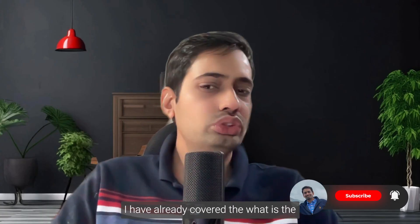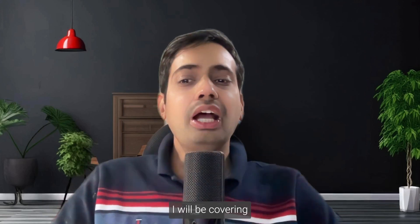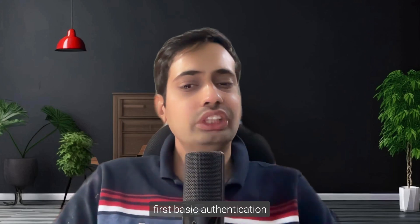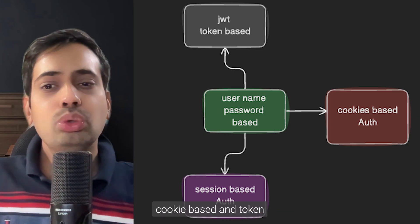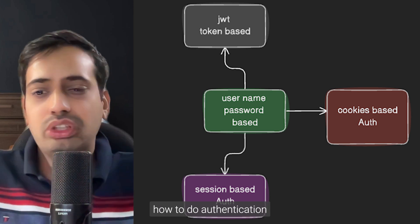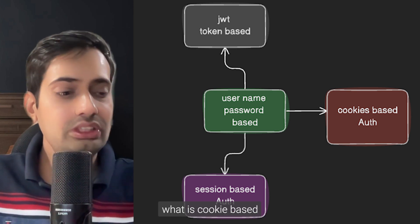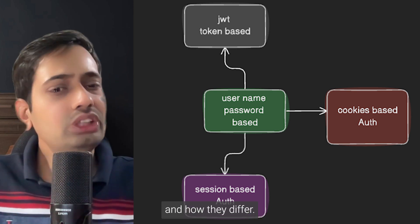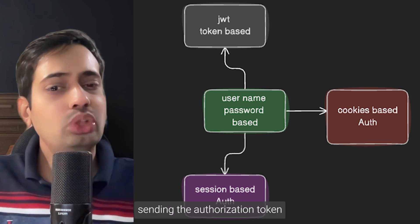Now, what are the major aspects I will be covering? First, basic authentication — username and password — through three different segments: session-based, cookie-based, and token-based authentication. Many people know how to do authentication but don't know the difference between these three: how you are managing sessions at the client side, how you are sending the authorization token — either in the session, in the cookies, or using a JWT token in the authorization header.